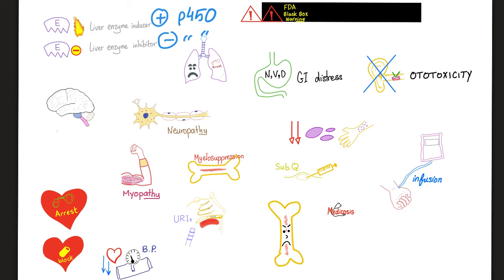Whenever a professor asks you what the side effects of a specific medication are, and if you have not studied well and have no idea how to answer, just say nausea, vomiting, diarrhea — and in 99% of cases you would be correct, because many medications cause those. This means the medication is ototoxic. This symbol means the medication causes cardiac arrest. This means heart block or bradycardia. This means the medication causes hypotension. This is upper respiratory tract infections, and this is again myelosuppression.